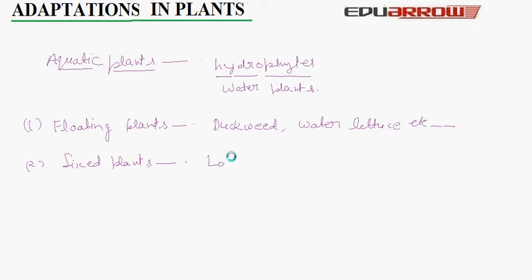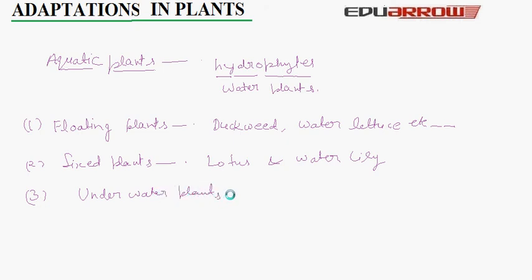The third group is underwater plants. These plants grow under water and have narrow leaves with no pores. They breathe through their body surface and help to keep the water clean. These plants are fixed to the soil at the bottom of the pond with the help of their roots. These plants are often grown in aquariums.